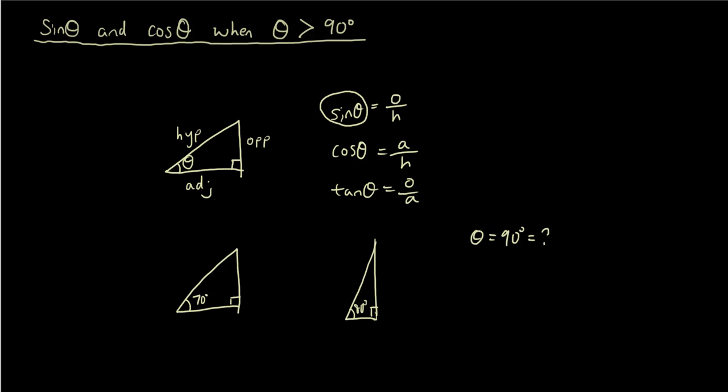Try drawing that triangle. Right, you can't even see a triangle, it'll just be a straight line. Or what if we extend it even further and say what happens if theta is bigger than 90, so 100 degrees? What would sine theta be?